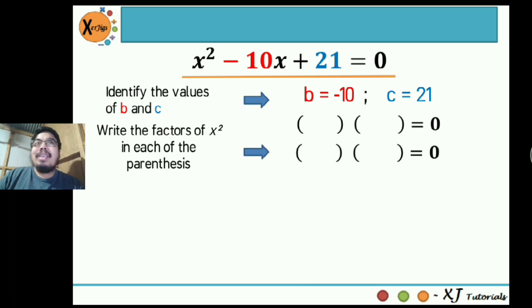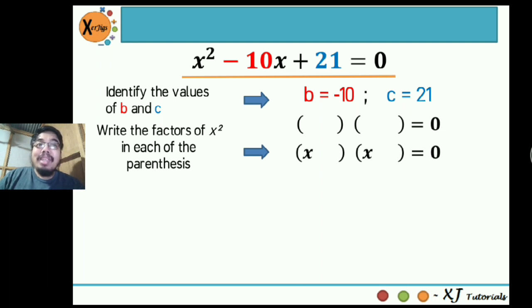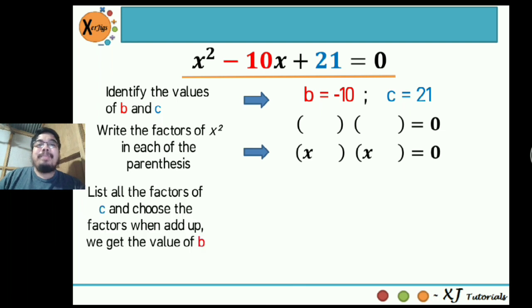So x² is like x multiplied by itself, so its factors are two x's. Write x in the first parenthesis and another x in the second parenthesis. Next step: list all the factors of c and choose the factors that when added up give us the value of b.